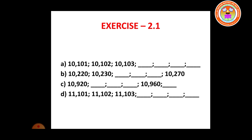The first question: 10,101 — 10,102 — 10,103, and we have to fill the blanks. The second question: 10,220 — 10,230, then three blanks, then 10,270. The third question: 10,920, then three blanks, then 10,960, then one blank. The fourth question: 11,101 — 11,102 — 11,103, then four blanks.